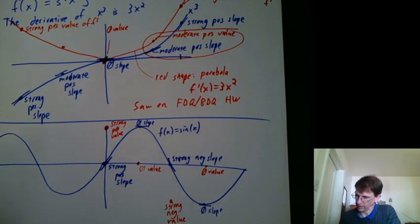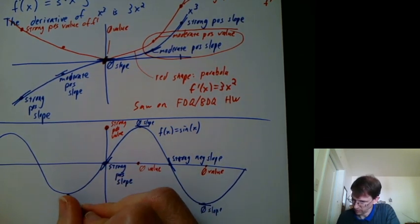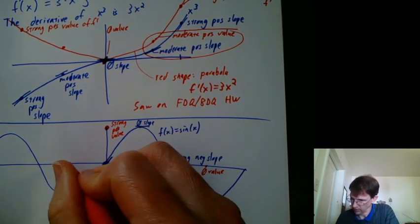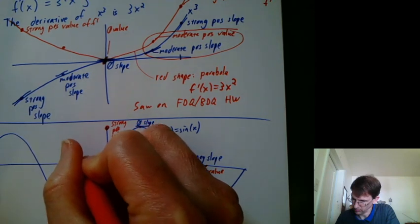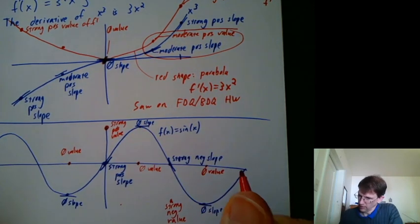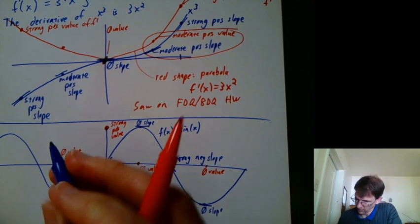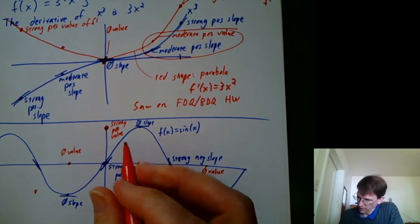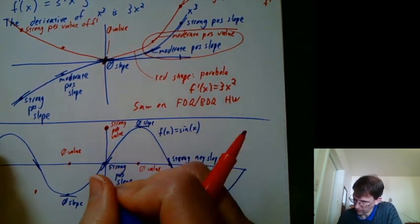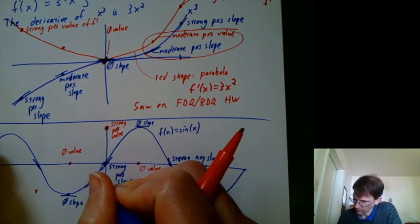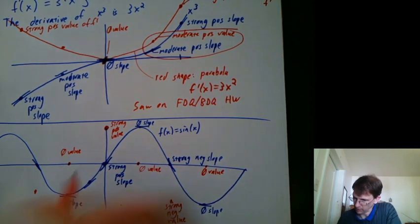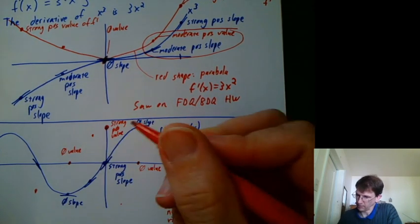And I can echo that same thinking over here. I've got a zero slope. So I get a zero value here for the derivative. And let's do one more. Here I've got a strong negative slope. So I should have a strong negative value. And in between, let's say right here, it's still a positive slope, but it's not as strong as it is over here. So I get a positive value, but not as positive. So I get something like that.